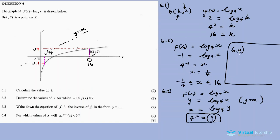For which values of x will the product of x times the inverse function f? So x times f⁻¹(x) less than 0. For this statement to be true, it means that either x must be negative.